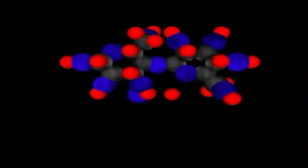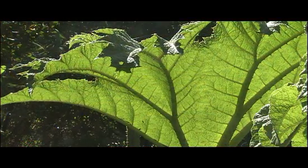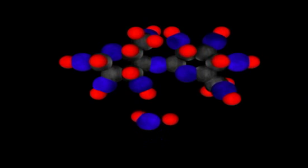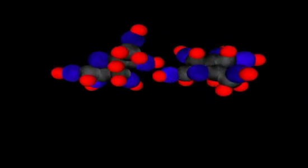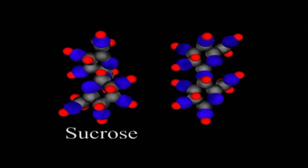Disaccharides are formed by linking two monosaccharides. Cells, especially those of plants, use disaccharides to store and or transport energy. When an organism needs energy, disaccharides are broken apart into their monosaccharide subunits by hydrolysis. Sucrose and lactose are two common disaccharides.